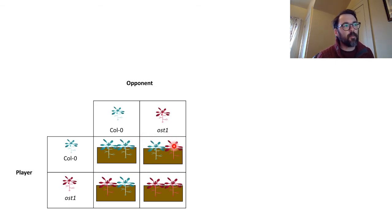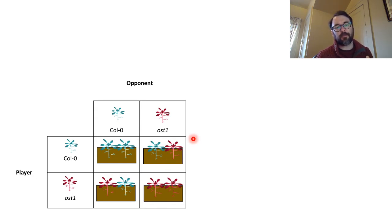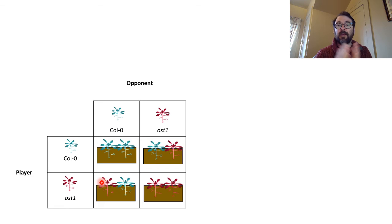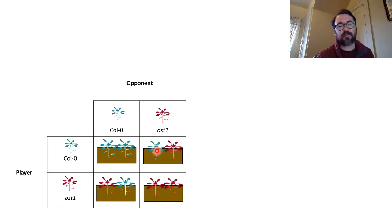There's something we need to worry about in science called pseudo-replication. If we measure one plant in one pot, that counts as one replicate. If we measure two plants in the same pot, we have two measurements but still only one replicate — those two plants are not independent of one another. By measuring Columbia in one pot and OST in a completely different pot, we have independence, which is an assumption of most scientific tests.